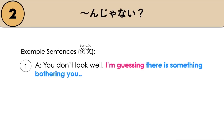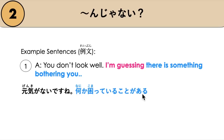For example: A says, 'You don't look well. I'm guessing there is something bothering you.' 元気がないですね? 'There is something bothering you' is 何か困っていることがある. We use the plain form ある, followed by んじゃないですか for 'I'm guessing'. So: 元気がないですね? 何か困っていることがあるんじゃないですか? And then B might say, 'As a matter of fact...' — え、実は…